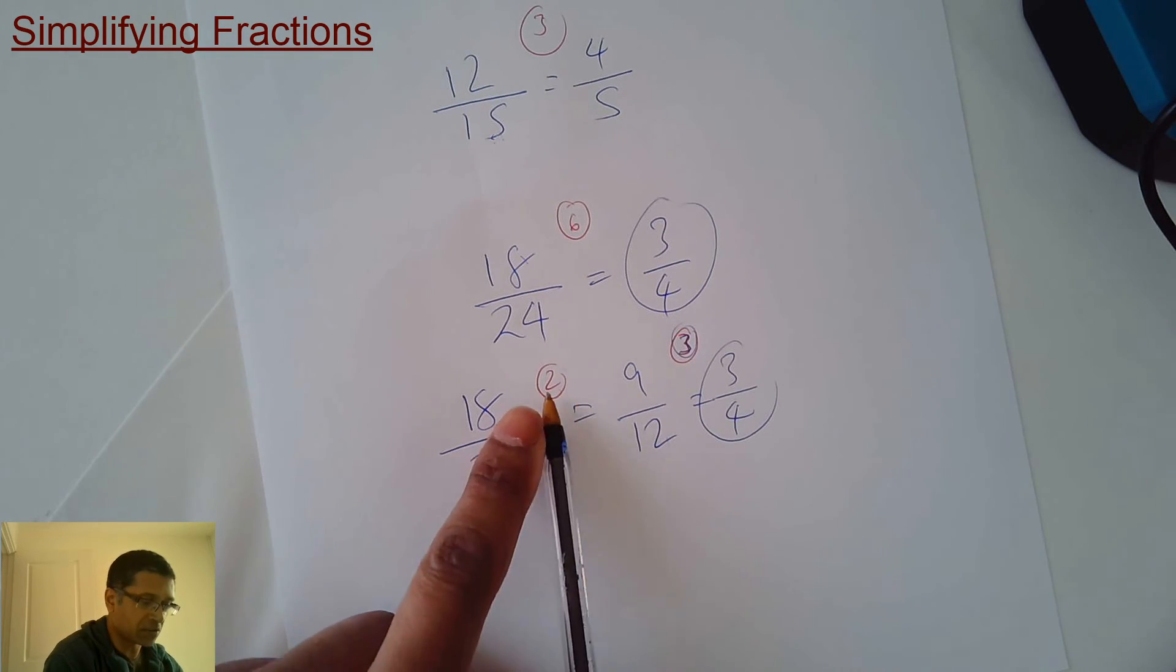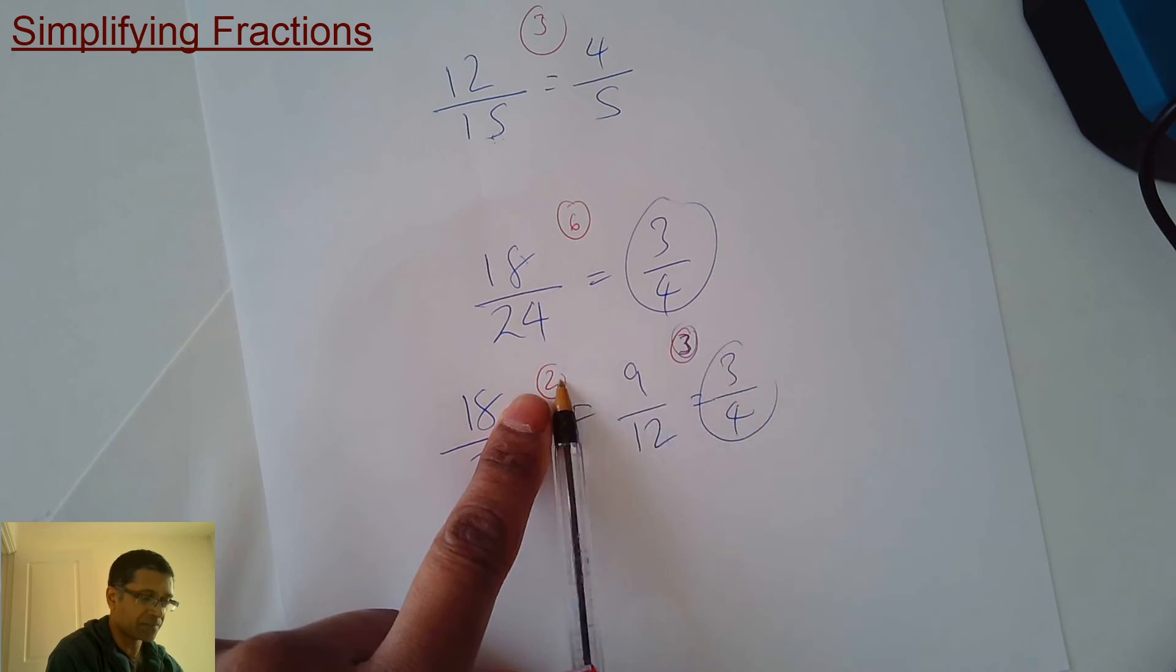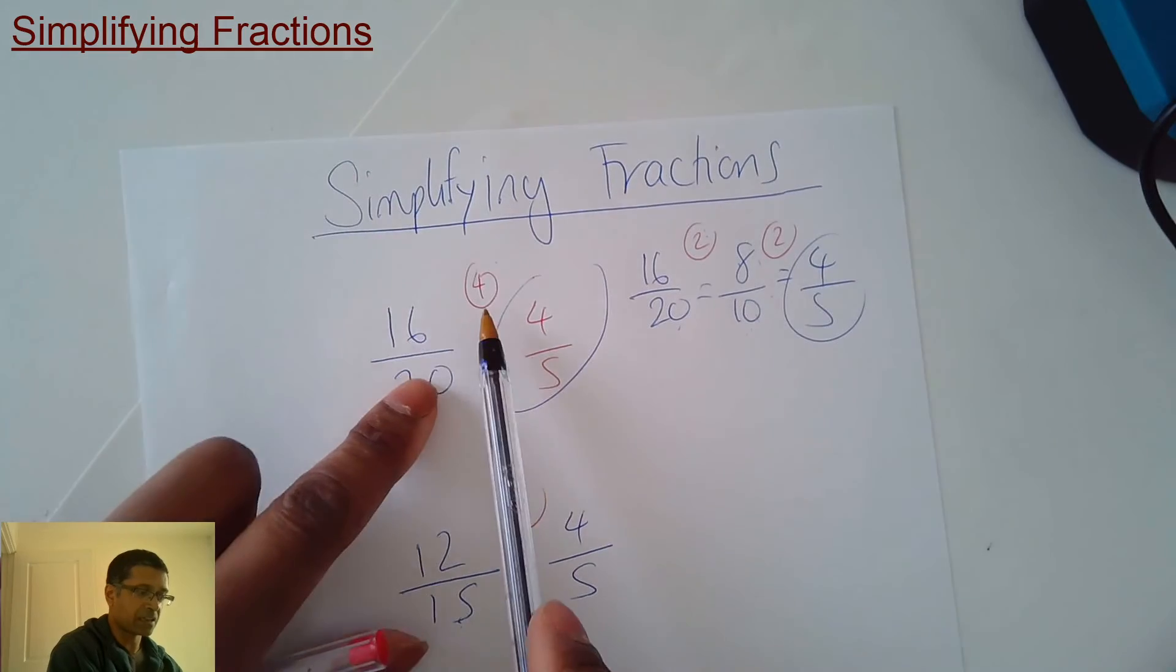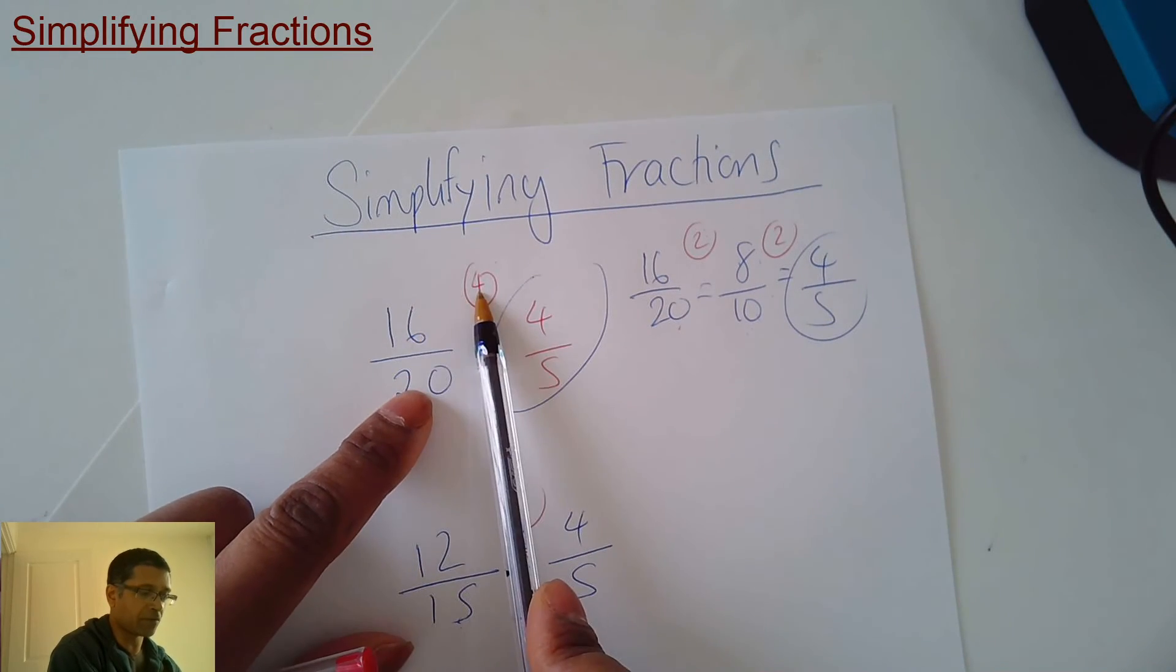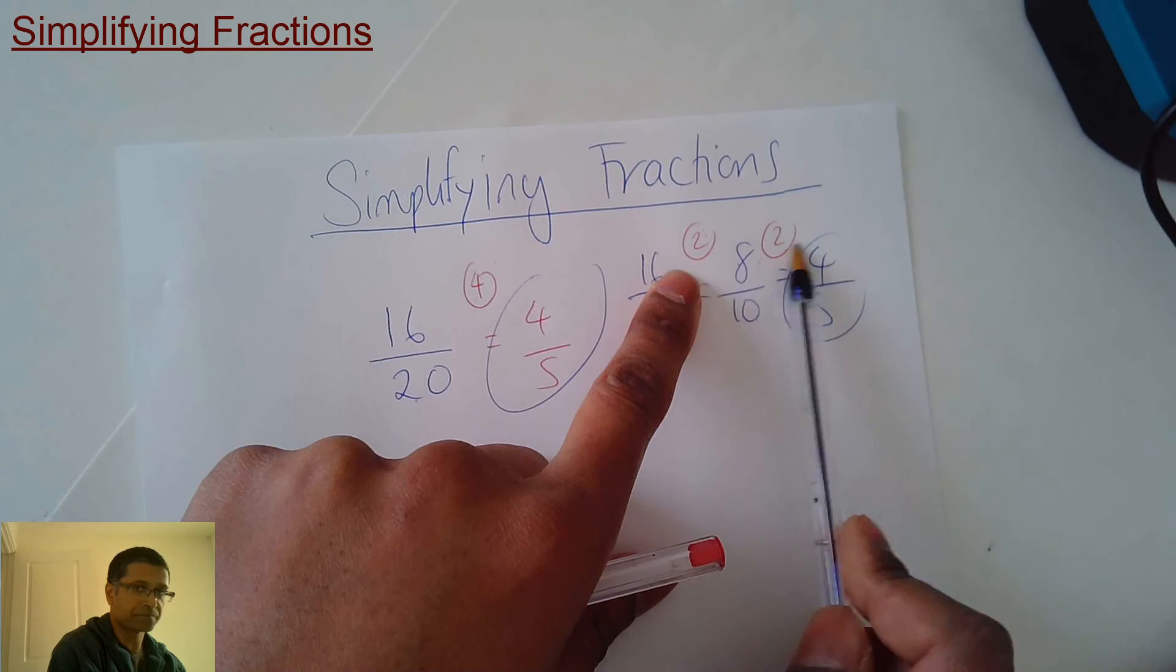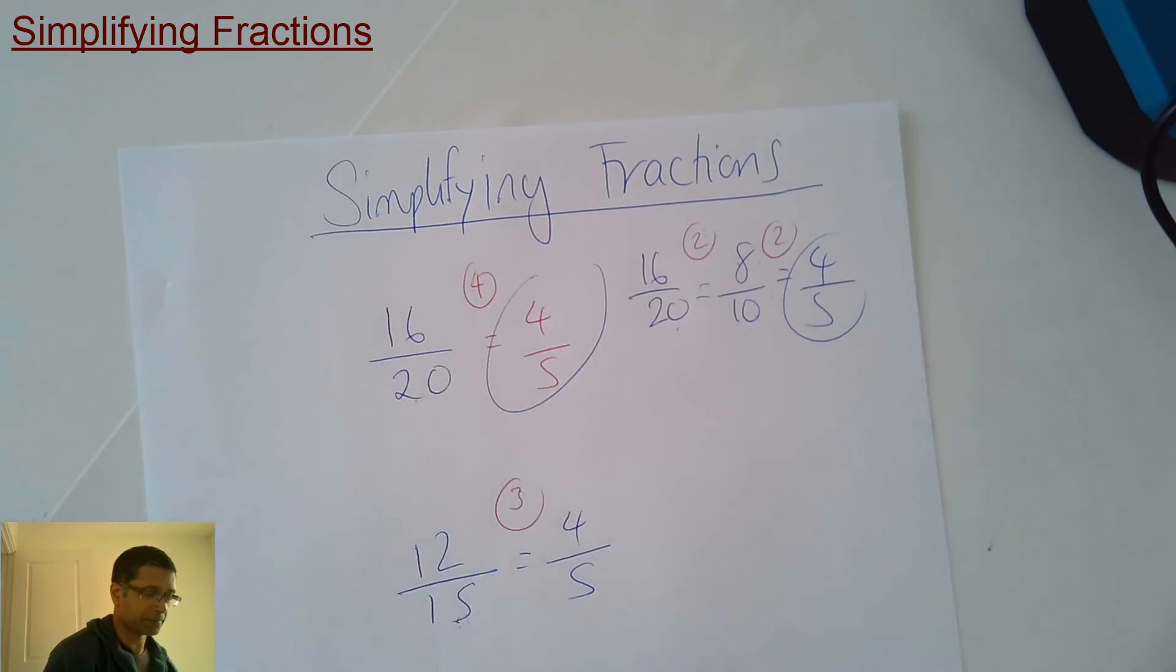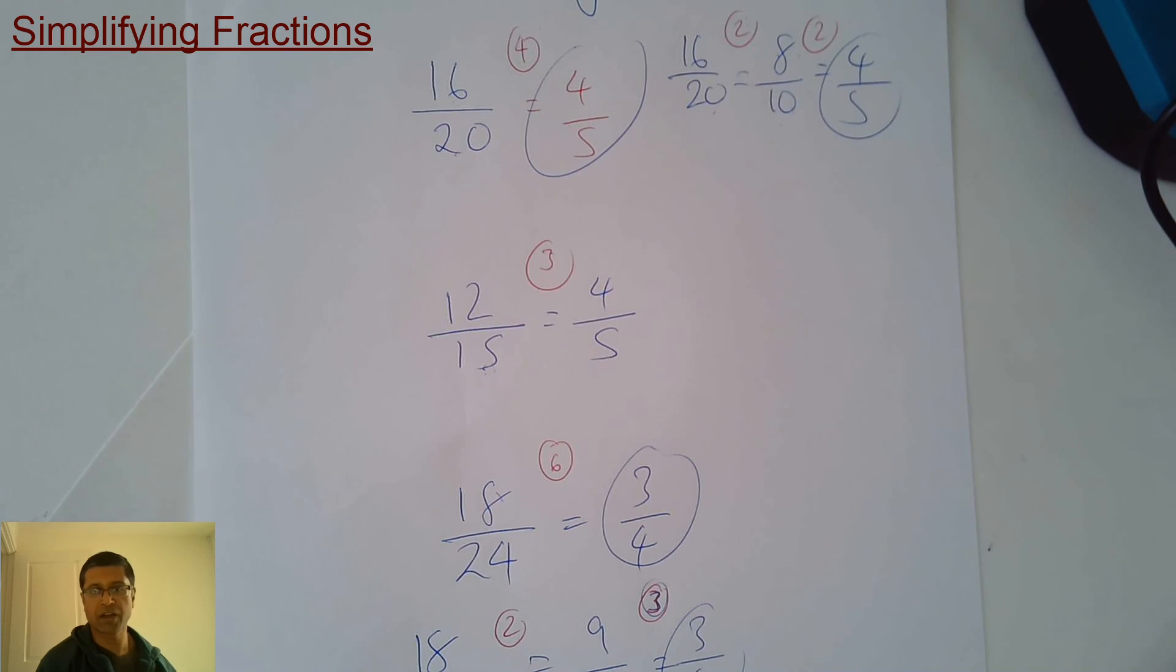But also notice, look, see the 2 and 3. 2 times 3 is 6. That's what we have here. Similarly over here, that was the quickest way by dividing by 4. And this took longer. But also notice, 2 times 2 happens to be 4. Alright, so that covers simplifying fractions.